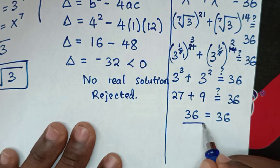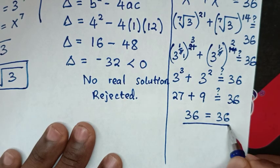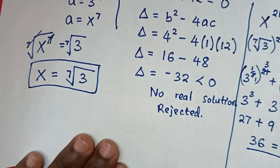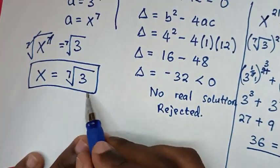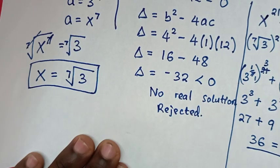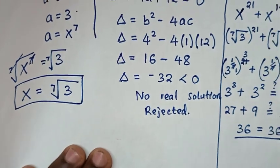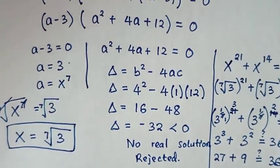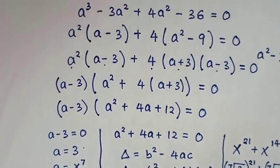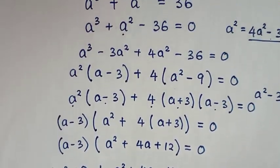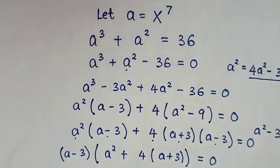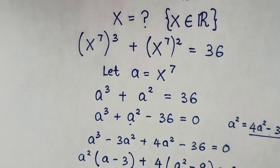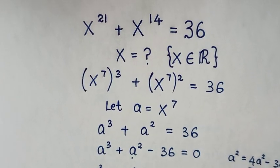Left side and right side are equal, so it is true that the value of x is the 7th root of 3. Thank you for watching. Don't forget to subscribe to the channel, and see you in the next video. Bye-bye.